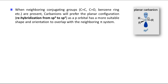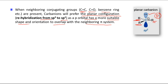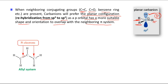Now if we have conjugating groups in R — such as a C=C double bond, C=O, or a C=C double bond that is part of a benzene ring — carbon will prefer the planar configuration. There will be rehybridization from sp3 to sp2, because in sp2 the lone pair is in a pure p orbital, which has the proper shape and orientation to overlap with the neighboring pi system for conjugation.